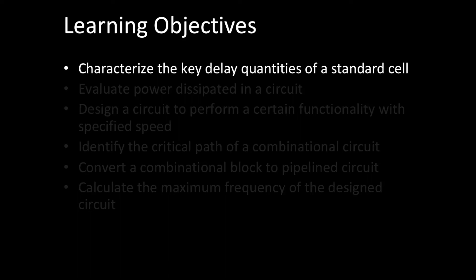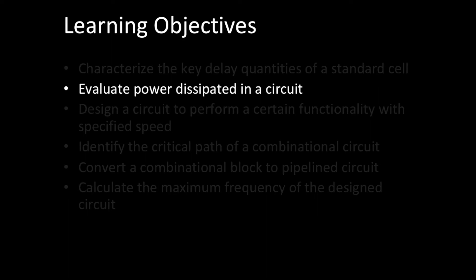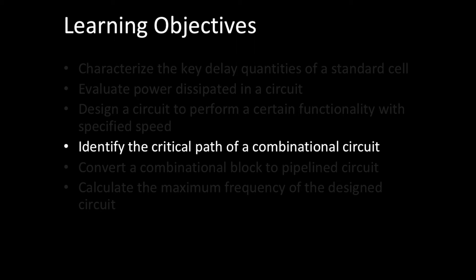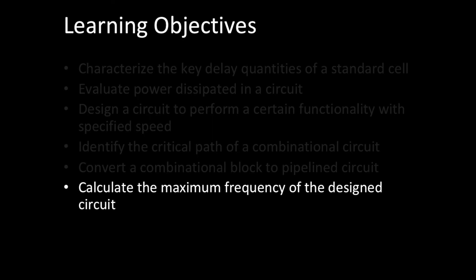After you're done with this course you should be able to characterize the key delay quantities of a standard cell, evaluate the power dissipated in the circuit both dynamic and leakage, then design a circuit to perform a certain functionality with specified speed, identify the critical path of the combinational circuit, then convert a combinational block to a pipeline circuit. Pipelining is another fantastic concept where you can improve throughput of your system. Then you should be able to calculate the maximum worst case operating frequency of a design circuit.